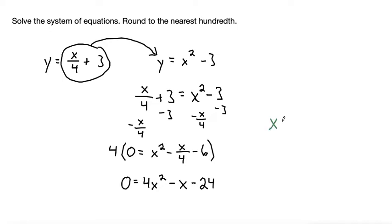If we use the quadratic formula, which is x is equal to negative b plus or minus the square root of b squared minus 4ac all over 2a, where this is set up as being 0 is equal to ax squared plus bx plus c.